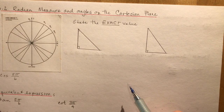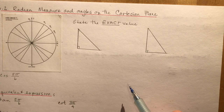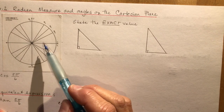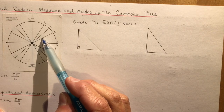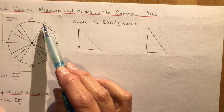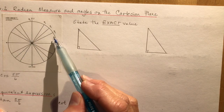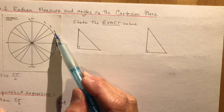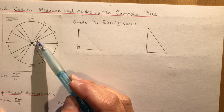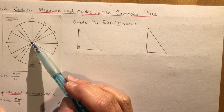Section 6.2 covers radian measure and angles on the Cartesian plane, focusing on converting degrees into radians. You'll be using radians all the time. The unit circle has a radius of 1, and as you go around it you can measure distances: for instance, π/6 units or π/4 units — which would be 30, 45, and 60 degrees respectively.